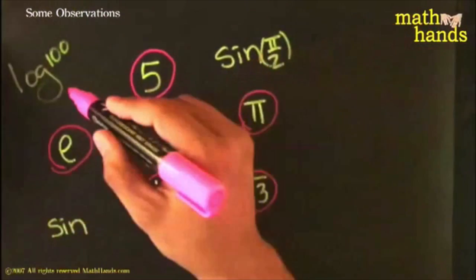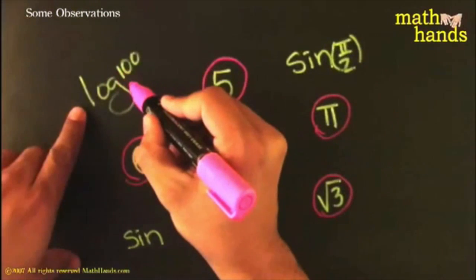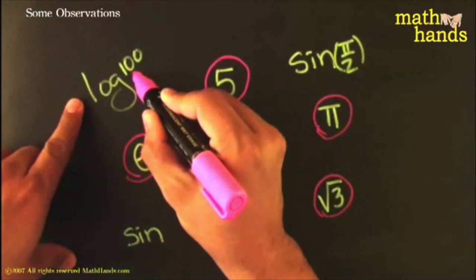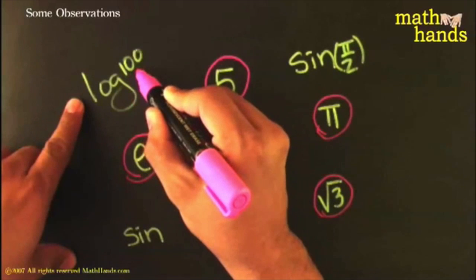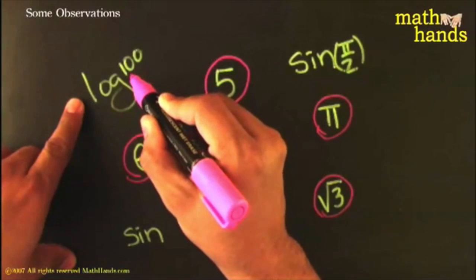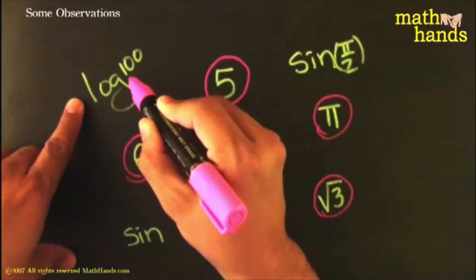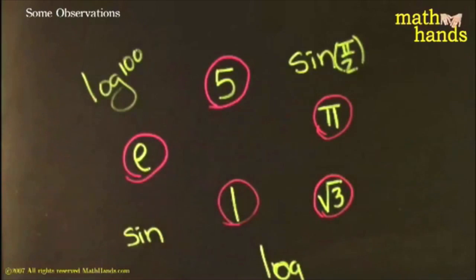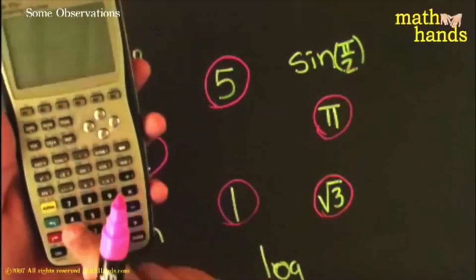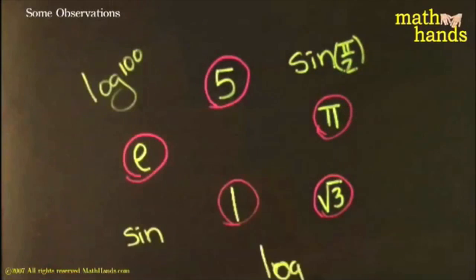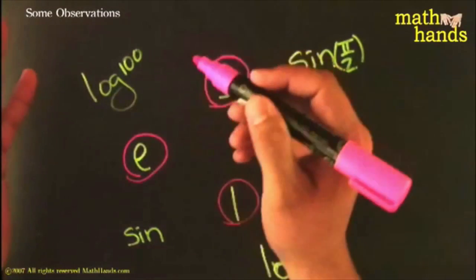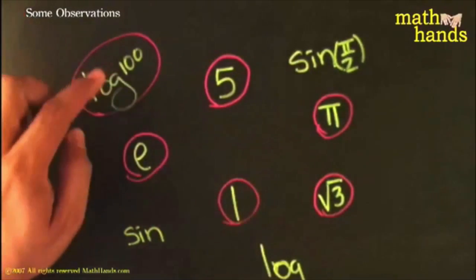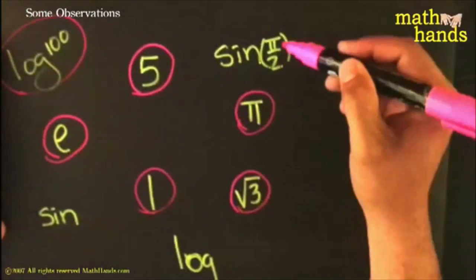How about this one - log of 100? Is that a number? Well, by definition that would be the exponent on ten needed to get to one hundred, and I think that number is equal to two. If you're rusty on your logs, just check: log of 100 is exactly two. So indeed this would be a number - that number equals two, so I would circle it.